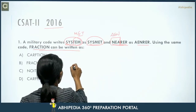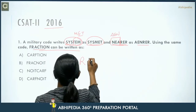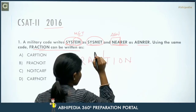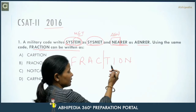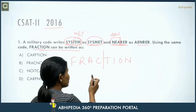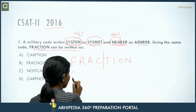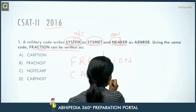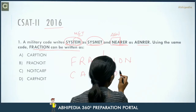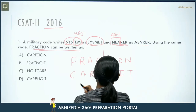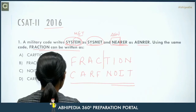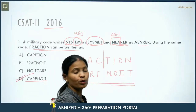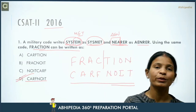So we apply the same logic to 'fraction'. We divide it into two parts: 'frac' and 'tion'. Then position exchange happens: 'c-a-r-f' comes first, then 'n-o-i-t'. So the answer becomes 'CARFNOIT', which is the fourth option, option D.